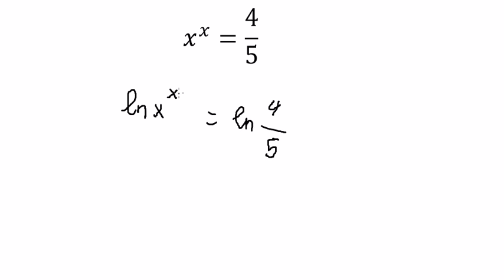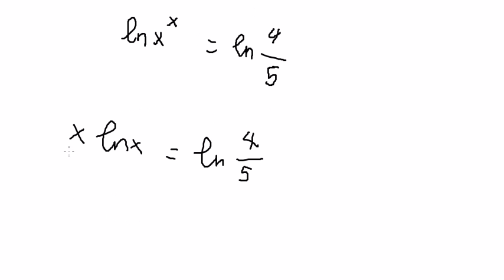So this s will go down and you get s multiplied with ln s equal to ln of 4 over 5. We can write this as e to the power of ln s, this is similar for s.